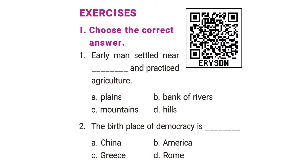The first section is choose the correct answer. The first question is: early man settled near blank and practiced agriculture. Options: plains, banks of rivers, mountains, hills. The correct answer is option B, banks of rivers.